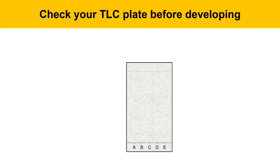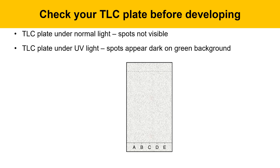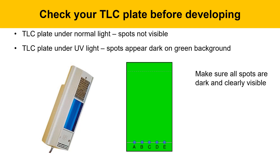Check your TLC plate before developing to make sure the spots are visible. The plate shows no spots under normal light because the spots are colorless, but under UV light they appear as a dark circle on a green background. When you shine a UV lamp on the plate, it should look like dark blue spots at the baseline. Make sure all spots are dark and clearly visible — if any spots are faint, spot them again with another coat.